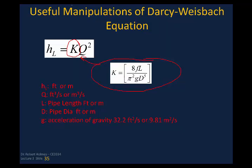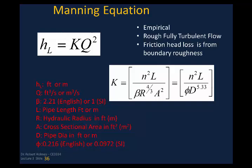Expressing the Darcy-Weisbach in terms of Q rather than velocity is straightforward: since V = Q/A and A = pi·D²/4, substituting into H sub L = f·(L/D)·(V²/2g) yields the Q-based formulation with the corresponding K value. This form is especially useful for Hardy-Cross pipe network solutions.